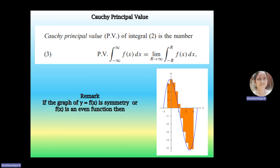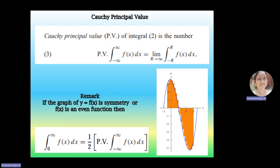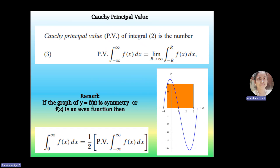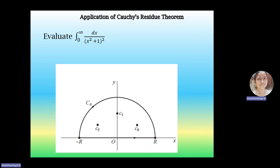Studying about the Cauchy Principal Value, we need to know about a remark. Whenever the given function f(x) is symmetric, or the given function is an even function, then integral from 0 to infinity of f(x) dx can also be written as 1/2 into the Cauchy Principal Value of the total integral of f(x) dx with limits minus infinity to plus infinity. Now let us see a problem as the application of Cauchy's Residue Theorem: evaluate the integral from 0 to infinity of dx divided by (x² + 1)².